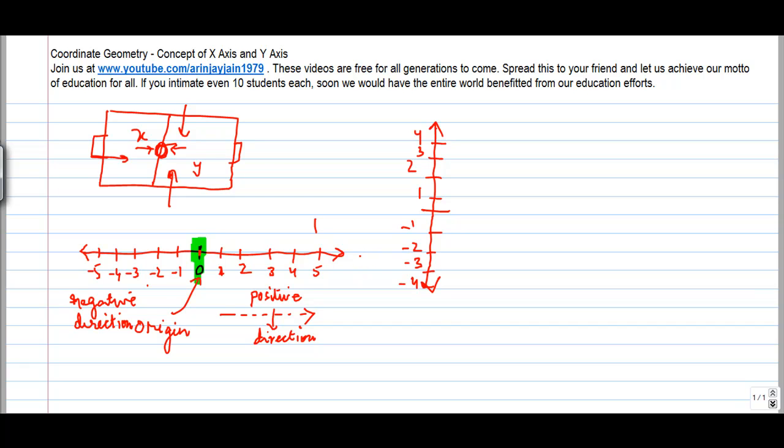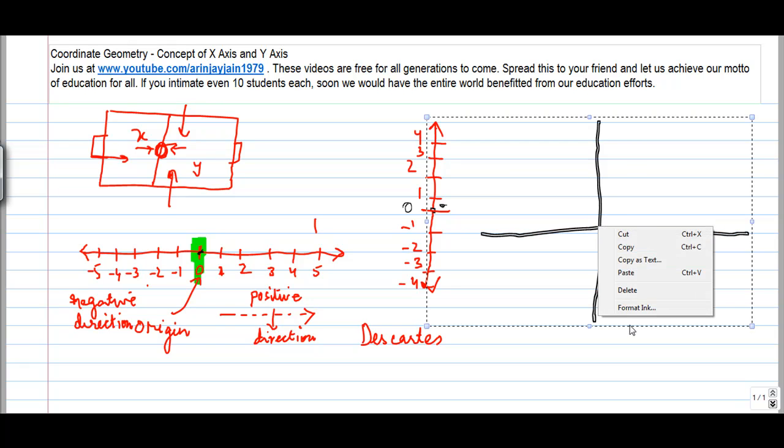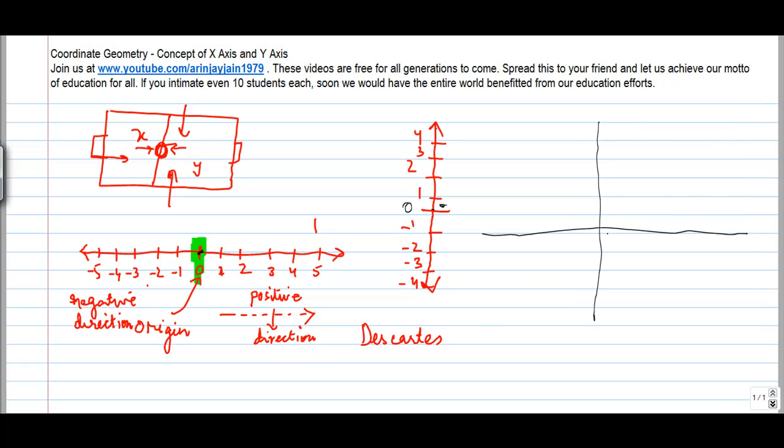Now a famous mathematician Descartes developed the concept of placing these two lines perpendicular to each other. What he did was that he placed these two lines perpendicular to each other such that the point of origin of this line coincides with the point of origin of this line. So this will become your point of origin or 0.